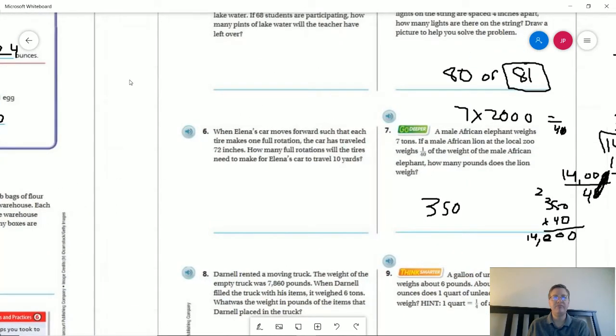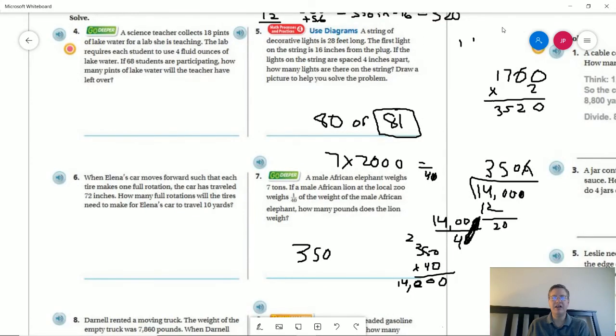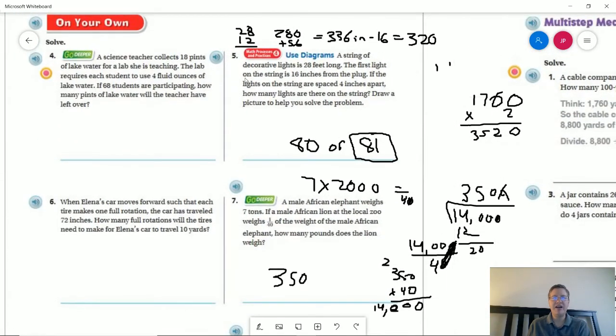And then our last page, number five. We have a string of lights 28 feet long. The first light is 16 inches from the plug. If the lights of the string are spaced four inches apart how many lights are there on the strings? So I'm not gonna draw a picture but what I ended up doing was I figured out how many inches we would have, so that would be 28 times 12 and so here are my partial products for that. That would give me 336 inches.